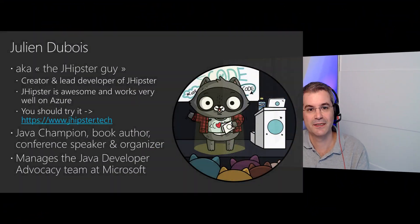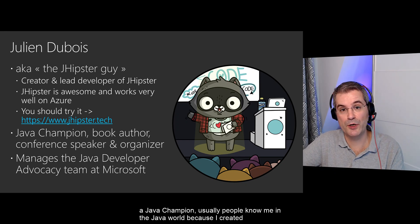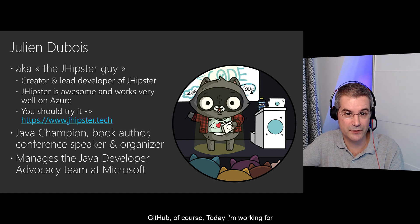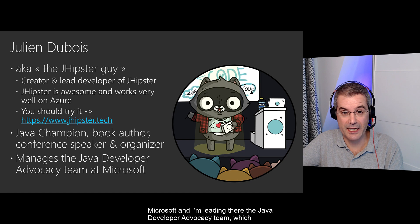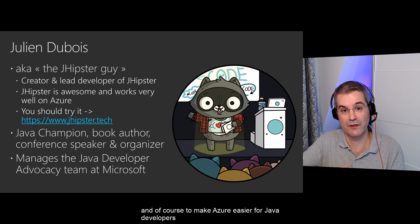Hi everybody. I'm very happy to talk with you about running Java microservices on Kubernetes. I'm Julien Dubois. I've been using Java for more than 20 years and I'm a Java champion. People know me in the Java world because I created and still lead the JHipster open source project, which you can find on GitHub. Today I'm working for Microsoft, leading the Java developer advocacy team — a team of Java experts — and our role is to make Java easier on Azure and Azure easier for Java developers.